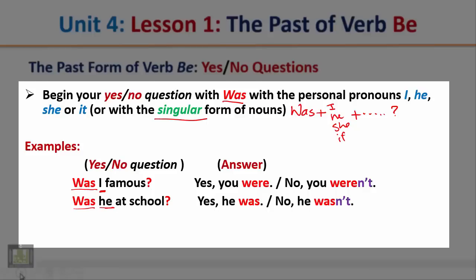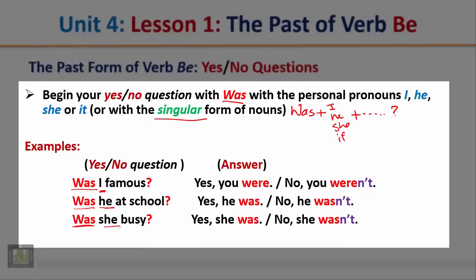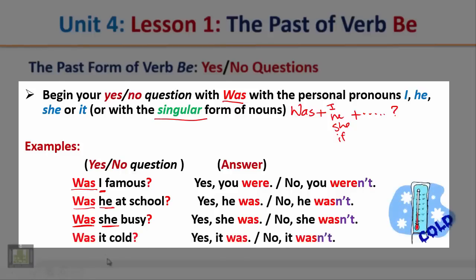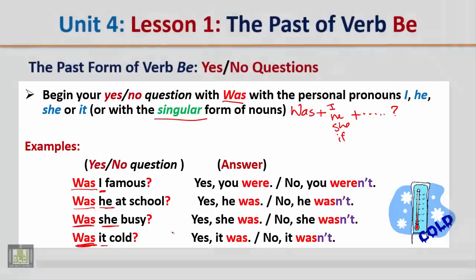'Was she busy?' We start the question with the verb 'was,' then put the subject. The answer: yes, she was, or no, she wasn't. 'Was it cold?' We start the question with the verb 'was,' then put the subject. The answer: yes, it was, or no, it wasn't.